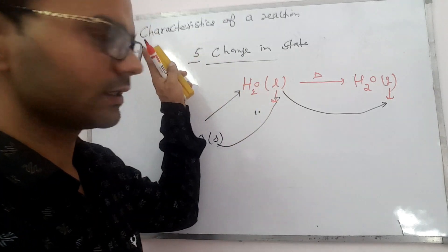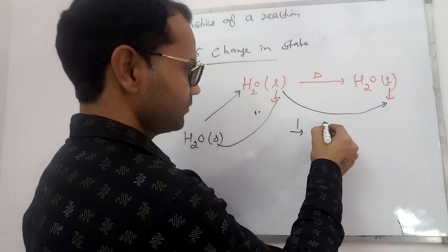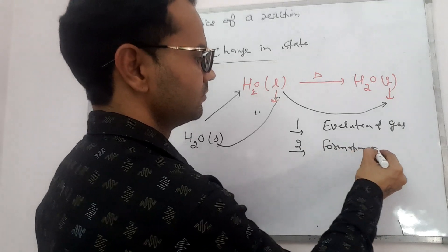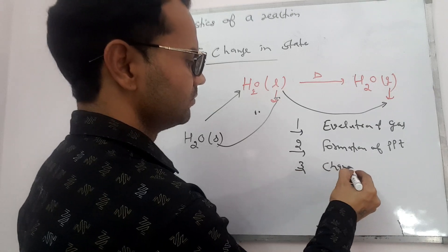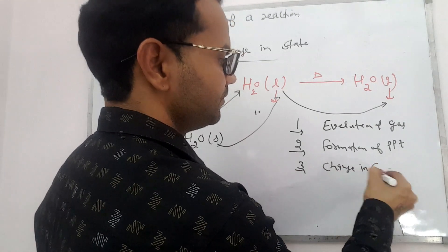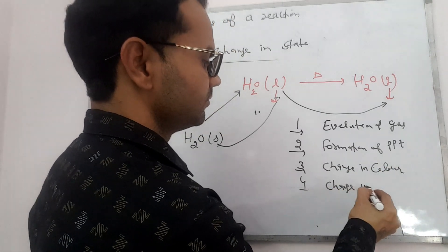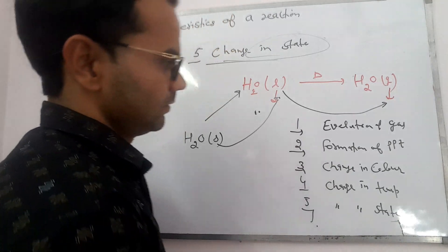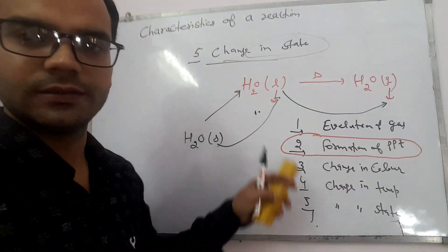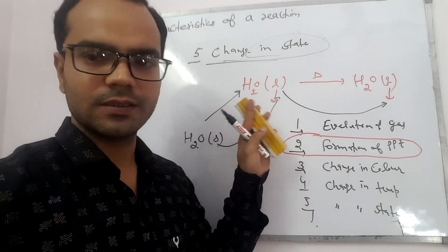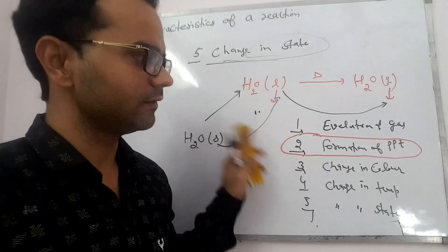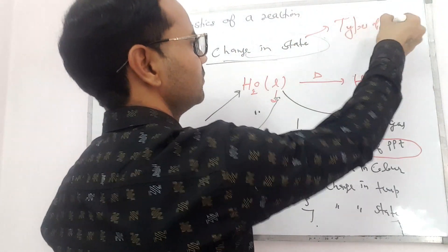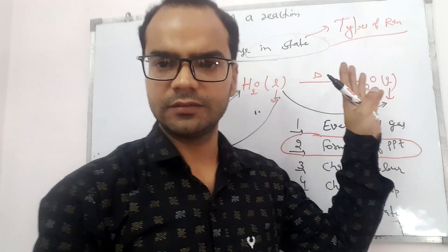So these are the five characteristics of a chemical reaction: first, evolution of a gas; second, formation of a precipitate; third, change in color; fourth, change in temperature; and fifth, change in state. The second one — formation of a precipitate — is quite important and many exam questions have been asked from it. In the next lecture, we will understand the types of reactions with definitions, suitable examples, and practical examples.